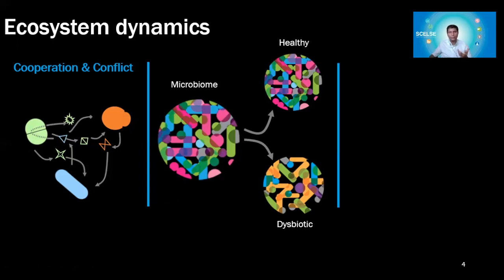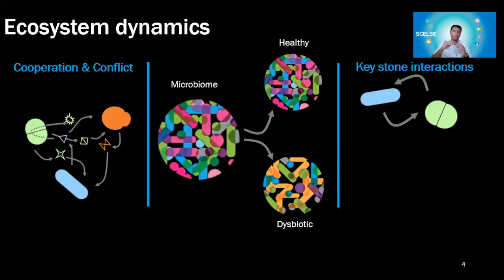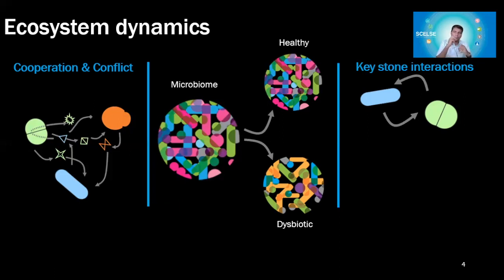We need to understand dysbiosis in the context of ecosystem dynamics, because environmental factors, food, or other triggers can affect the dynamics between organisms. That's how a new strain probably emerges over time as part of its own evolution and becomes infectious. In the context of cooperation, we want to understand what are the key species and how they shape the whole function of the community, because these key species and key interactions are very important — they basically take care of the system even as many organisms come and go.